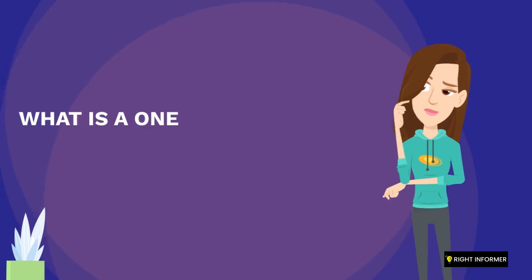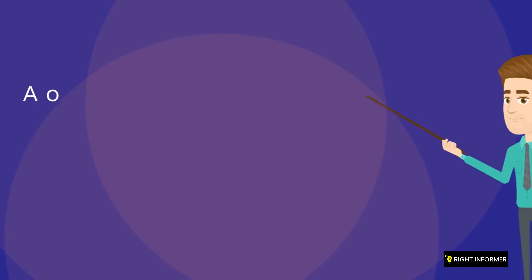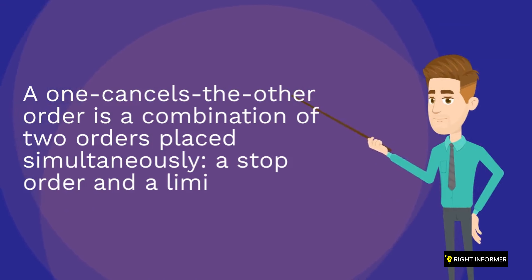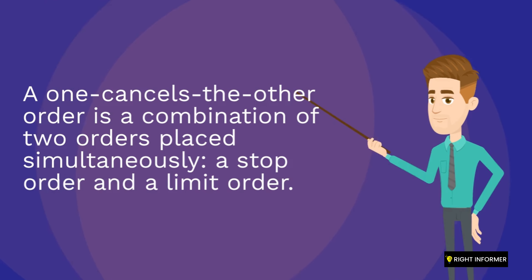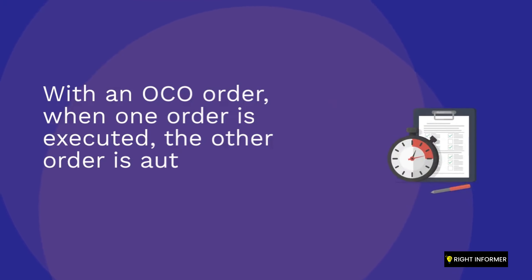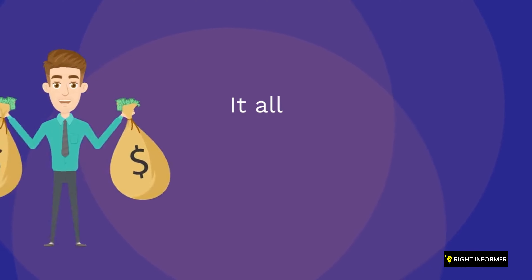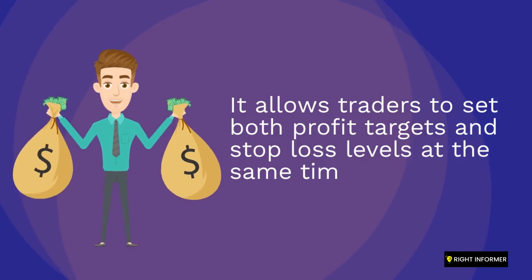What is a One Cancels the Other OCO order? A One Cancels the Other order is a combination of two orders placed simultaneously — a stop order and a limit order. With an OCO order, when one order is executed, the other order is automatically cancelled. It allows traders to set both profit targets and stop loss levels at the same time.